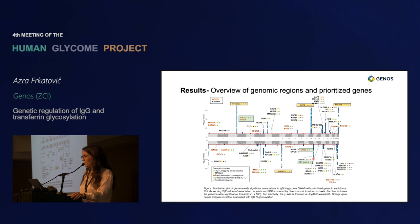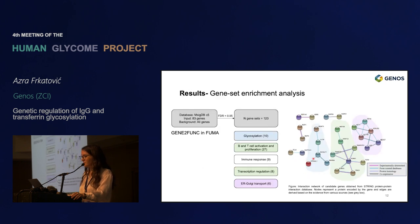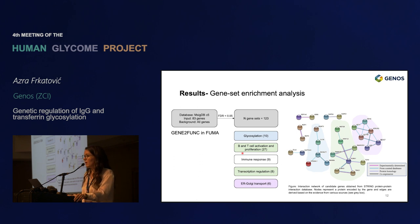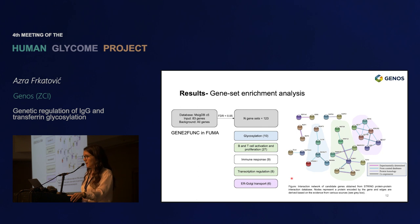When we put these genes into a gene-set enrichment analysis, we see the expected enrichment for glycosylation pathways, but we also see enrichment in B and T cell activation and proliferation and transcription regulation. This may indicate the importance of the levels or proliferation of cells producing specific IgG molecules with specific glycan patterns. We also see enrichment in genes involved in ER-to-Golgi transport, again indicating the importance of enzyme and substrate levels in the cell for the glycosylation pathway.